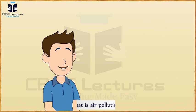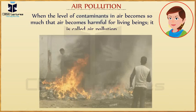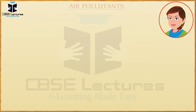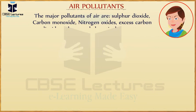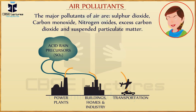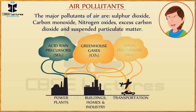What is air pollution? When the level of contaminants in the air becomes so high that the air becomes harmful for living beings, it is called air pollution. The major pollutants of air are sulfur dioxide, carbon monoxide, nitrogen oxide, excess carbon dioxide, and suspended particulate matter.